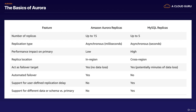They can both act as a failover target, but Aurora won't give you any data loss, whereas with MySQL, because of the lag, there can be potentially minutes of data loss. With Aurora, you do get automatic failover from your Aurora primary to your read replica. With MySQL, you also get automatic failover; however, you can have a few minutes worth of data loss, whereas with Amazon Aurora, they guarantee that you will not. Failover is automated with Aurora, whereas with MySQL, it's not.